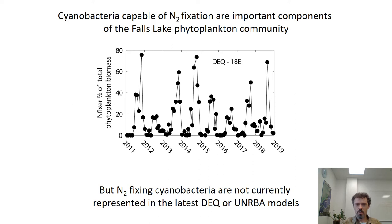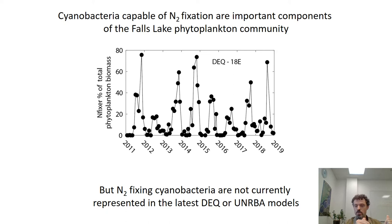The reason I got interested in this is because I noticed that cyanobacteria potentially capable of fixing nitrogen — those containing heterocysts, in the family Nostocales — are a large fraction of the phytoplankton biomass during summer. This graph shows five to eight years of data from a station in the middle of Falls Lake. During the summer, the fraction of total biomass that's potentially nitrogen-fixing can reach almost 80 percent, representing a significant fraction of the biomass.